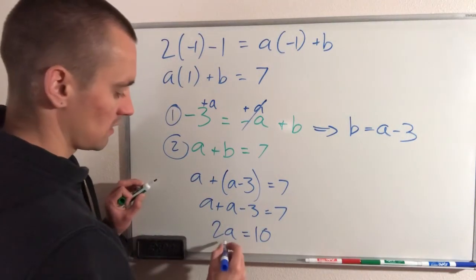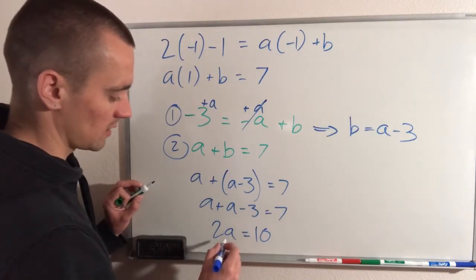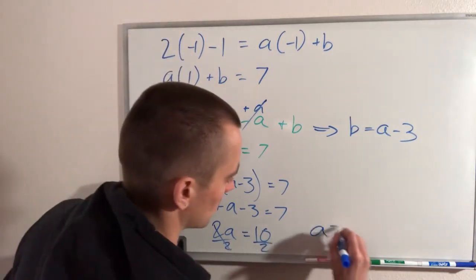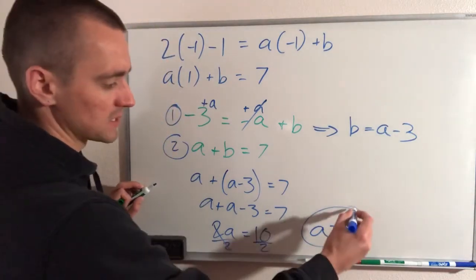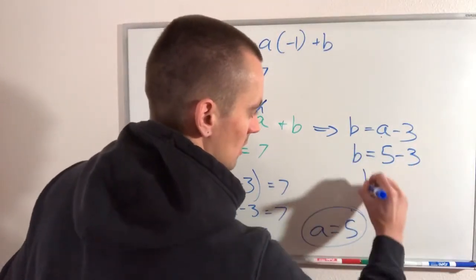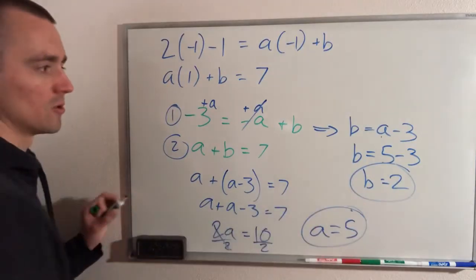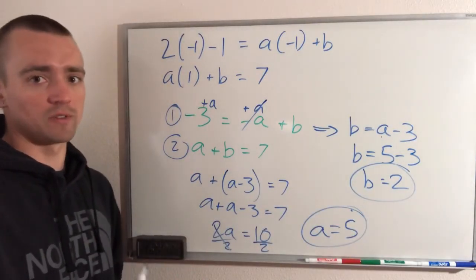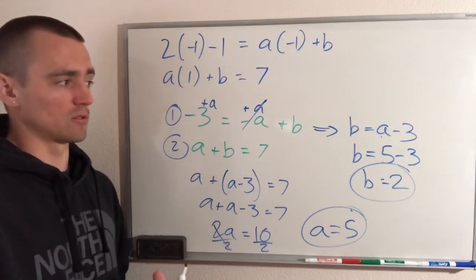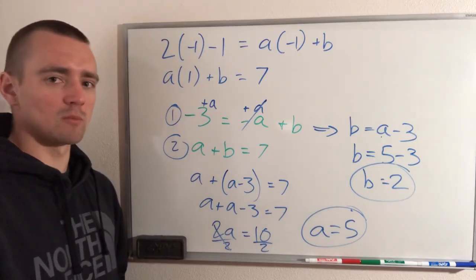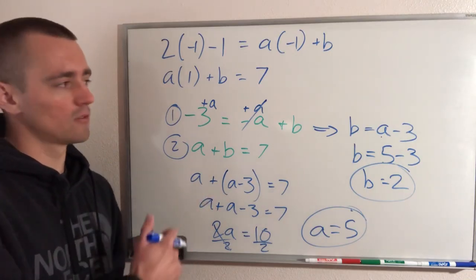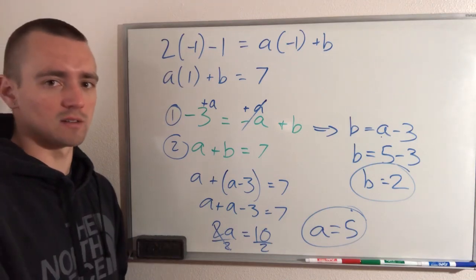Dividing both sides by 2, we get a = 5. Now we plug a = 5 back into b = a − 3, giving b = 5 − 3, so b = 2. Therefore a = 5 and b = 2 will make the original piecewise function continuous everywhere, because it ensures continuity at both transition points. Let me know if that made sense — drop a comment below if you have questions, and I'll link to another similar problem so you can keep practicing.